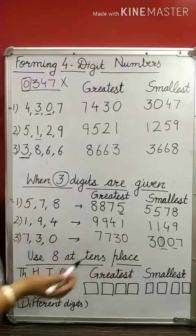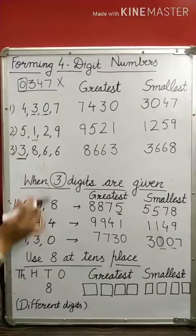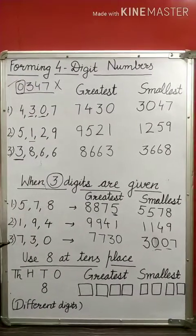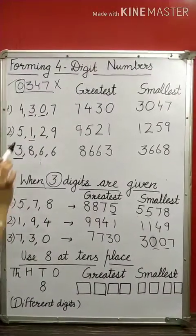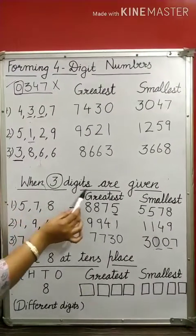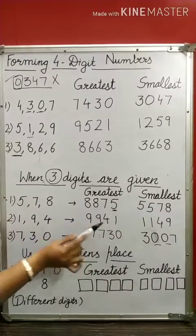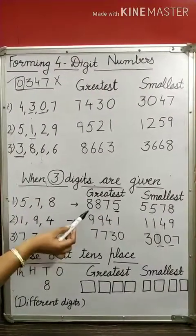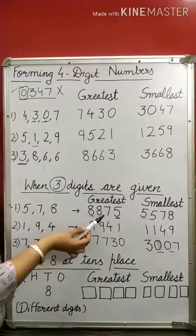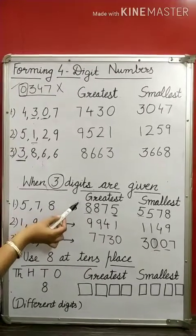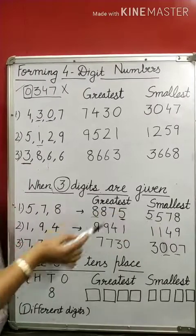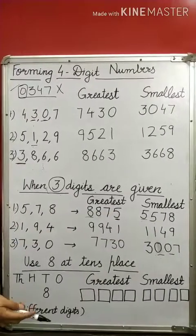In the first case, we framed 4-digit greatest and smallest numbers when given with 4 digits. In the second case, when given with 3 digits, we frame the greatest and smallest 4-digit number by repeating either the greatest digit or the smallest digit. We arrange in descending order for the greatest number, and ascending order for the smallest.